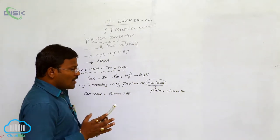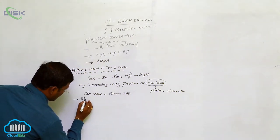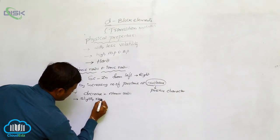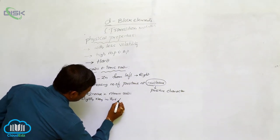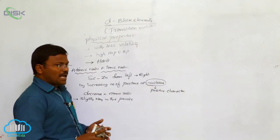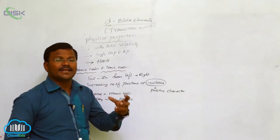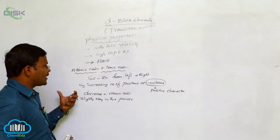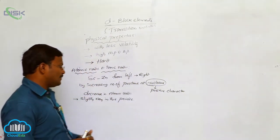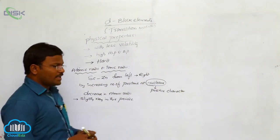This decrease in atomic radii is the general concept, but the amount of decrease in atomic radii slightly varies across a period. Sometimes a higher decrease and sometimes a lesser decrease in atomic radii is observed while moving from scandium to zinc in d-block elements.